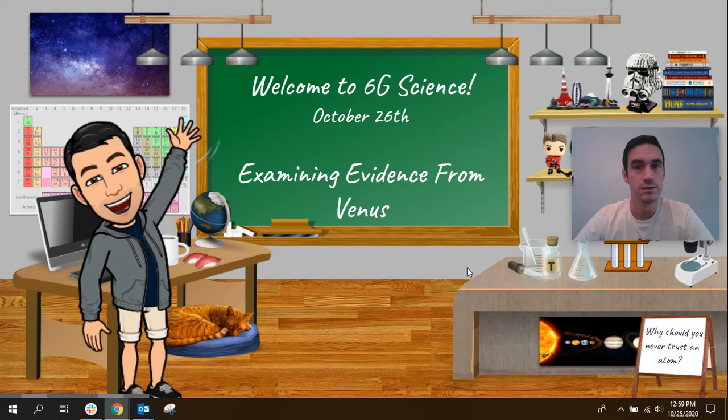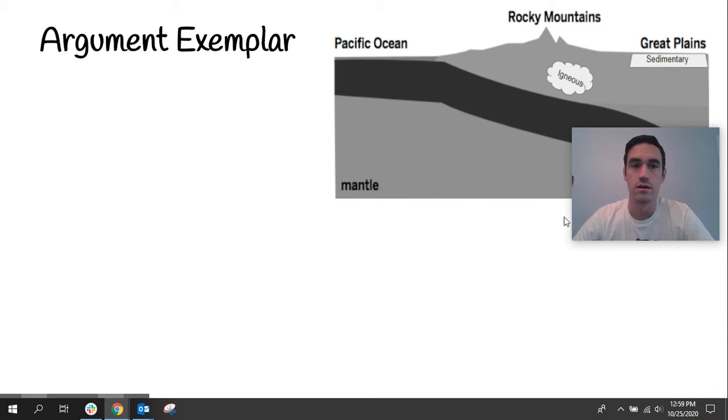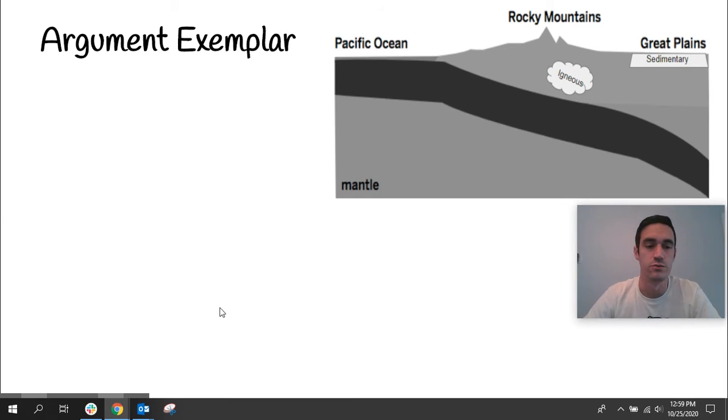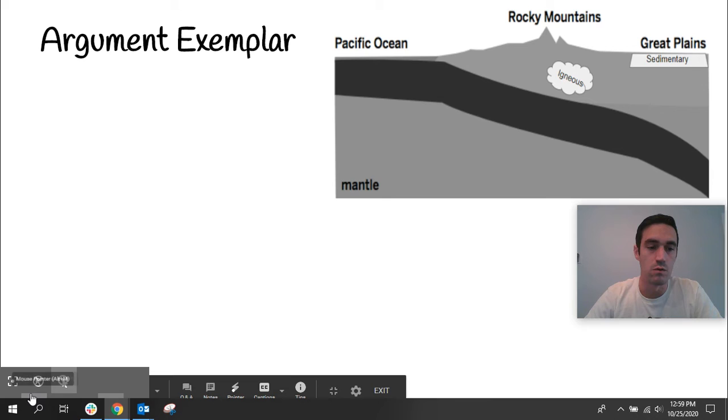Now, before I get into what we're going to do today, I want to take a look at our written argument from last week. On Friday, you had to write an argument choosing one of those claims, and you had this diagram as your last piece of evidence to use. So we're going to take a look at what probably should have been your argument here, or what an example of a really good one would be.